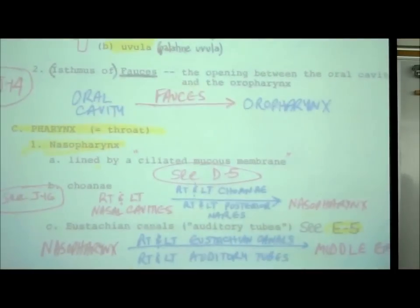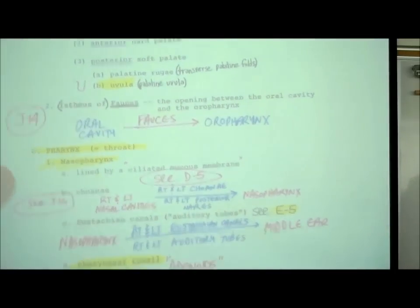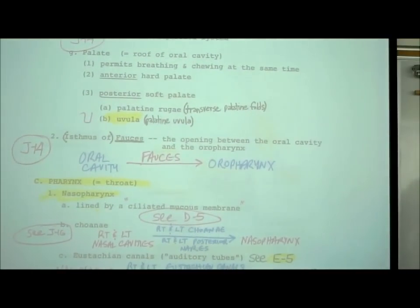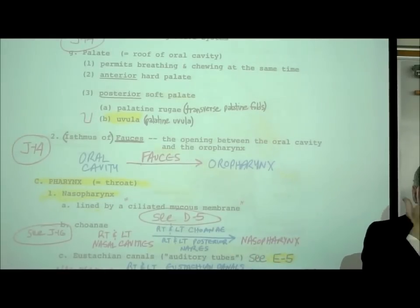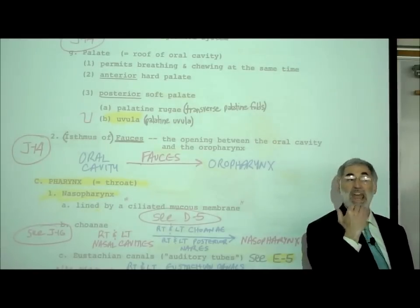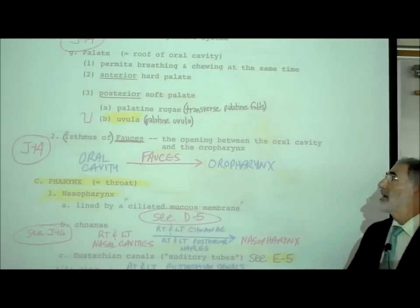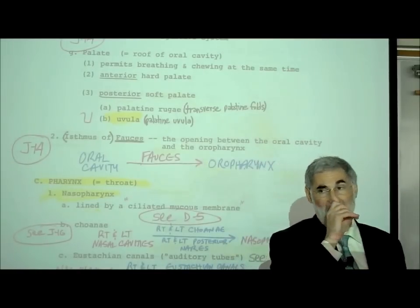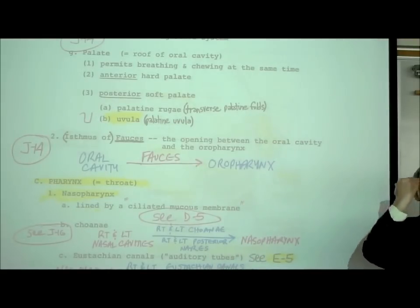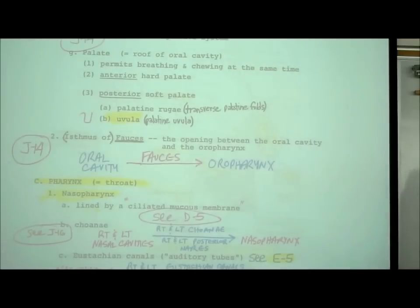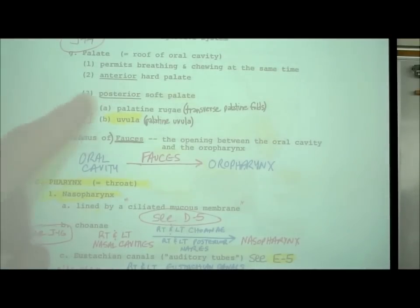On J14, the palate — or roof of the mouth. The roof of your mouth separates your mouth from your nose, allowing you to chew food and breathe at the same time. A child born with a cleft palate — a hole in the roof of their mouth — has milk go up into their nose and can't breathe, requiring surgical correction.